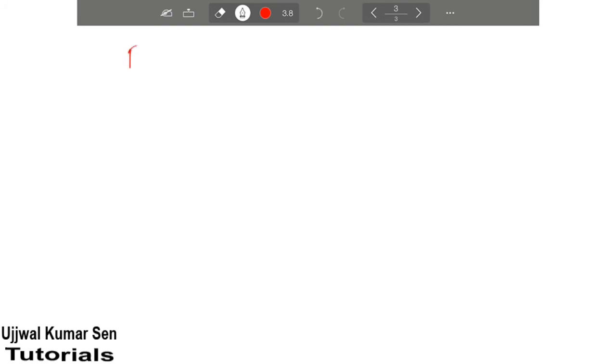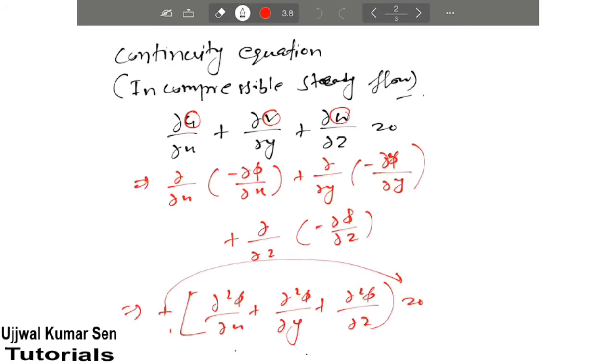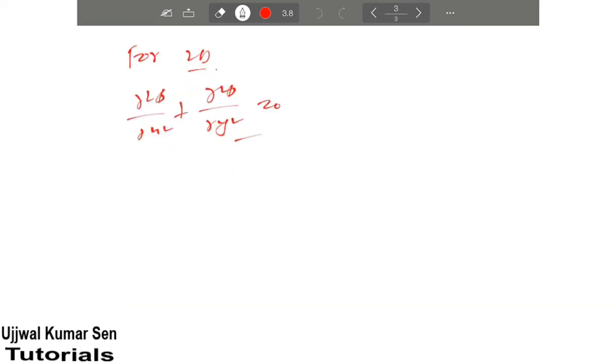Now for two dimensional, we have to remove curly square phi upon curly z square. So curly square phi upon curly x square plus curly square phi upon curly y square equals zero. This equation is known as Laplace equation.